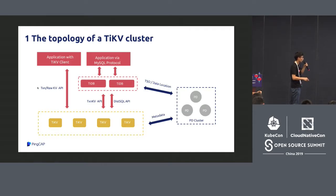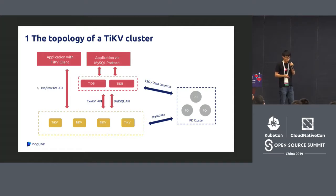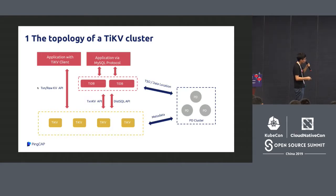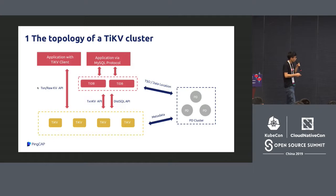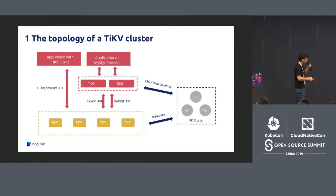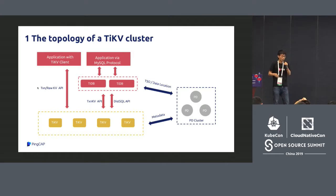TiKV doesn't work alone — it involves PD, which is the brain of the whole cluster. PD manages cluster data, monitors cluster state, and can schedule cluster capacity. From this layer, TiKV exposes transactional and raw KV APIs. For example, TiDB itself is a NewSQL database built on top of TiKV. TiDB translates the SQL layer down to the key-value level and sends it to TiKV. You can also build your own distributed system on TiKV, for example by implementing the Redis protocol.